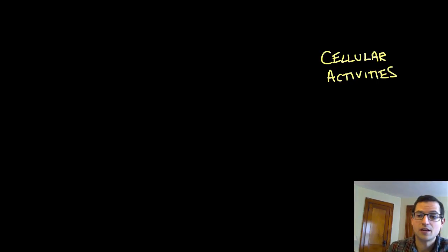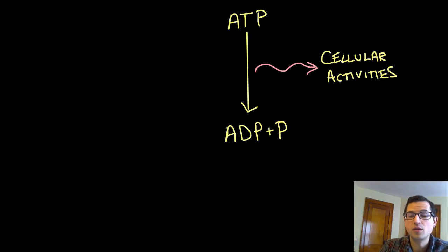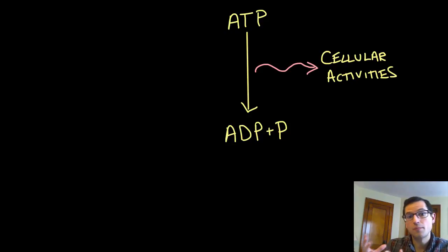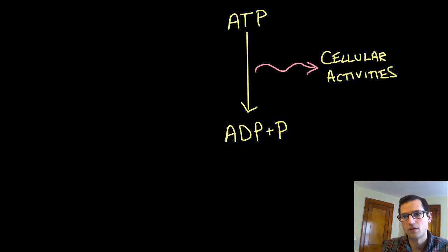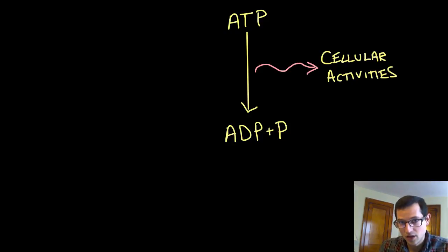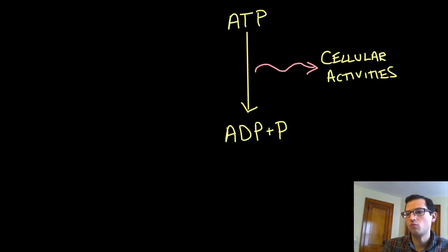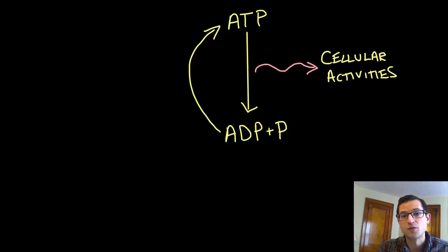So in that video, we established that these chemical reactions that require energy — most of them in the cell get that energy from the breakdown of ATP, adenosine triphosphate, into ADP and phosphate. We talked about ATP as a sort of charged-up battery, and ADP with phosphate as a depleted or discharged battery. And then we said there must be a way to recharge the battery so that we can continue powering all these various cellular activities, so that we can continue to make new molecules, maintain and repair our tissues, contract our muscles, think our thoughts, and so forth.